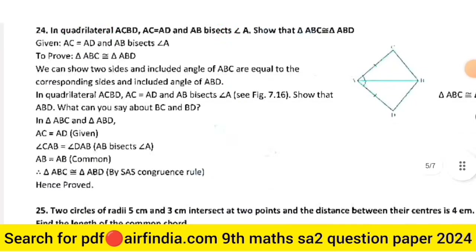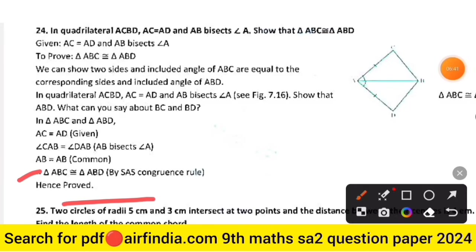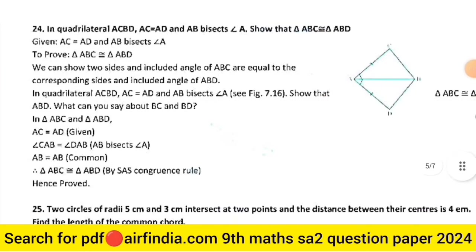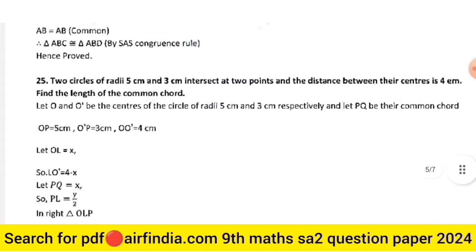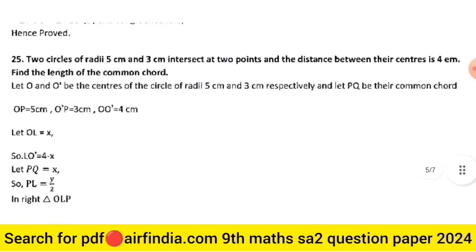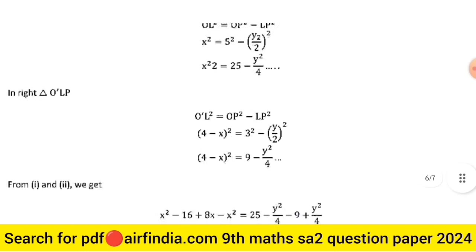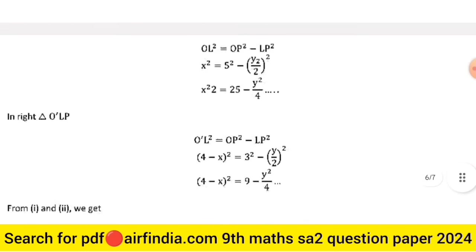Question 24: in quadrilateral ACBD, AC = AD and AB bisects angle A — show that triangle ABC is congruent to triangle ABD. The given conditions are noted, and the diagram is shown. Full proof can be completed using the SAS congruence rule. Question 25: two circles of radius 5 cm and 3 cm — full solution is given.